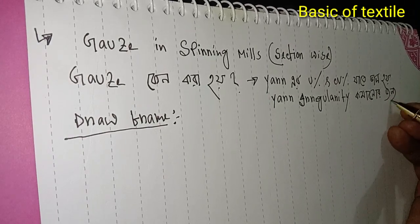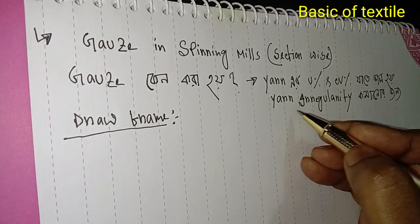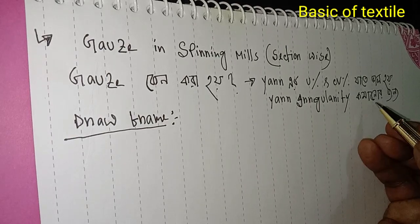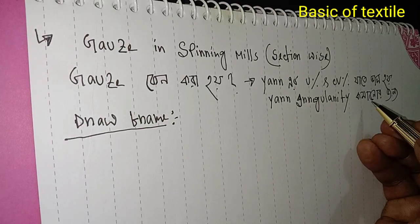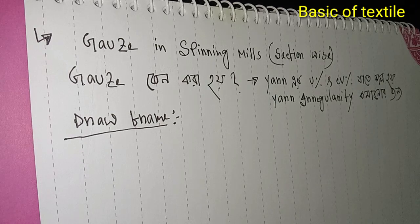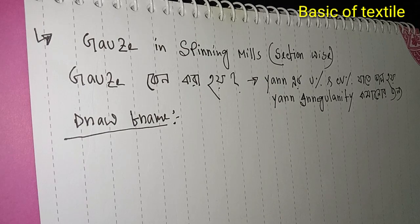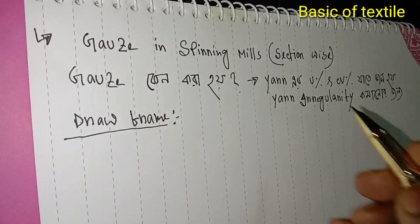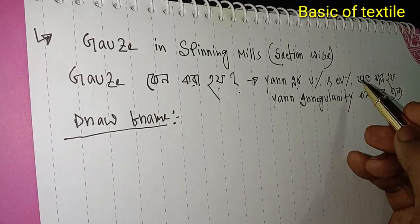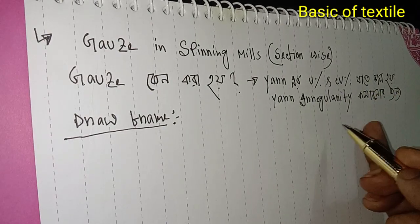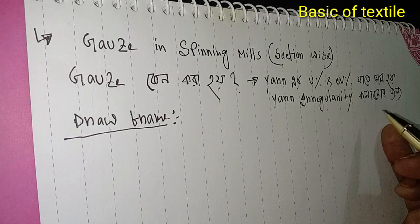Common or general yarn irregularity decrease. If it increases, control that. The CV% and U% person - even CV% value, follow the author yarn irregularity reduction process.